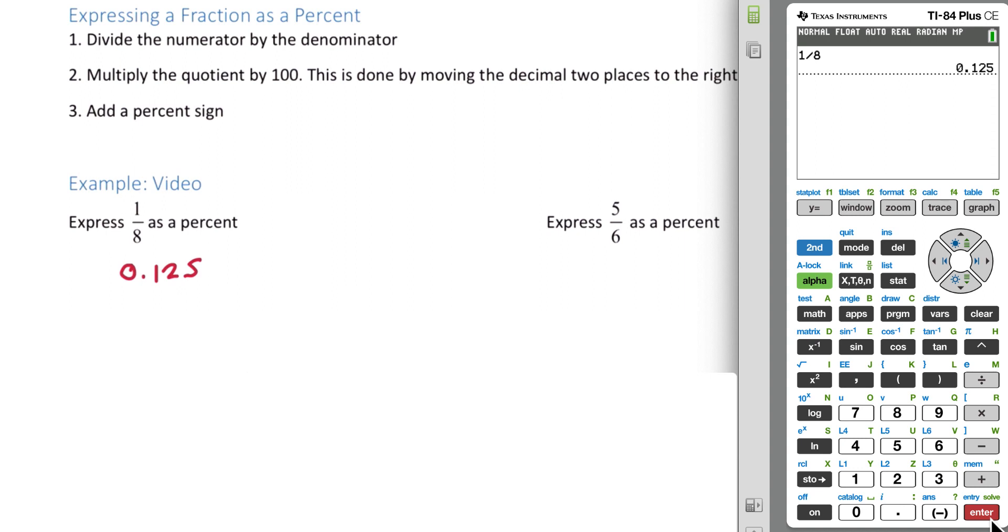The next thing we do is multiply that number by 100, which essentially is just going to move the decimal point two times to the right. Notice that when I multiply by 100, the decimal sign simply moves two times to the right, and we're left with 12.5.